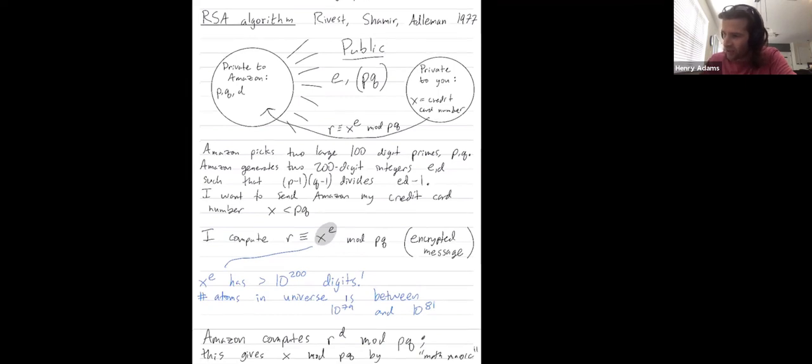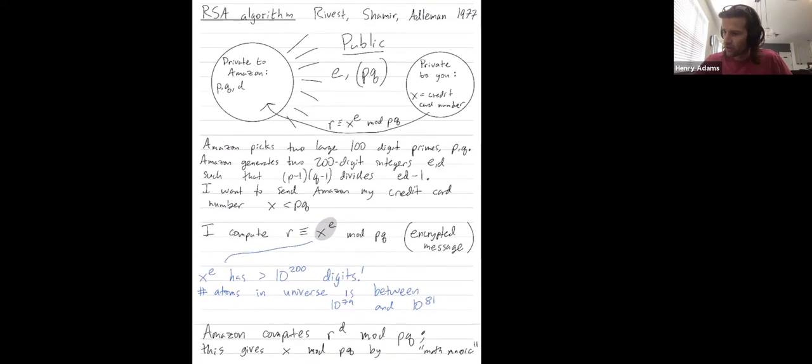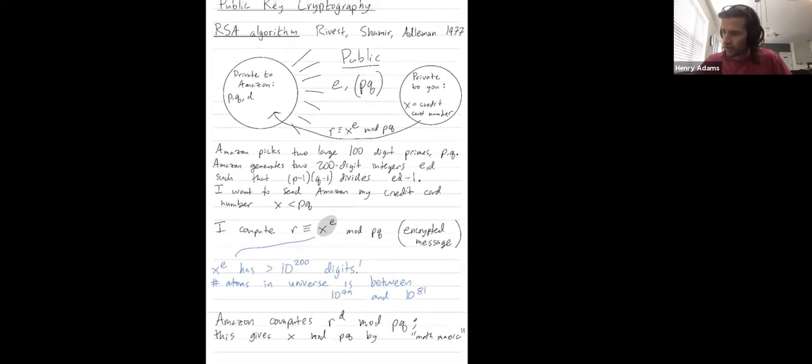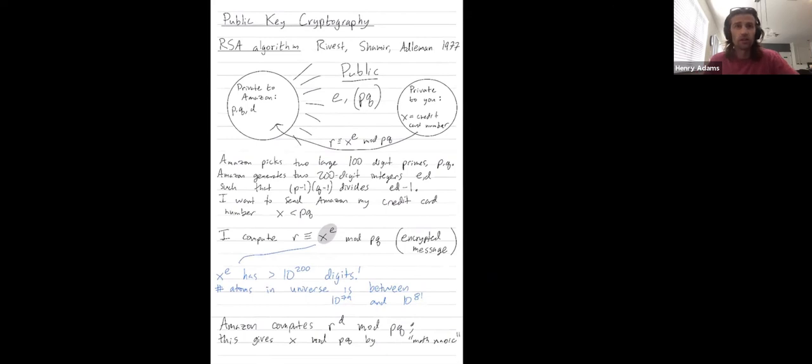And furthermore, since x was less than pq, x mod pq, the remainder when divided by pq is just x. So that's how this particular algorithm works.